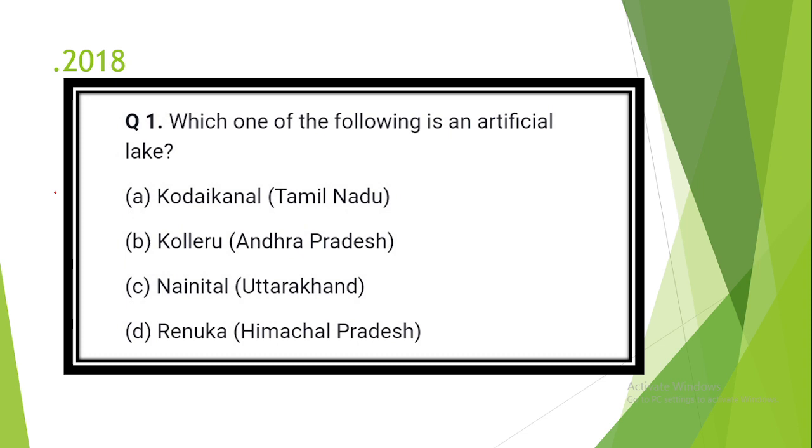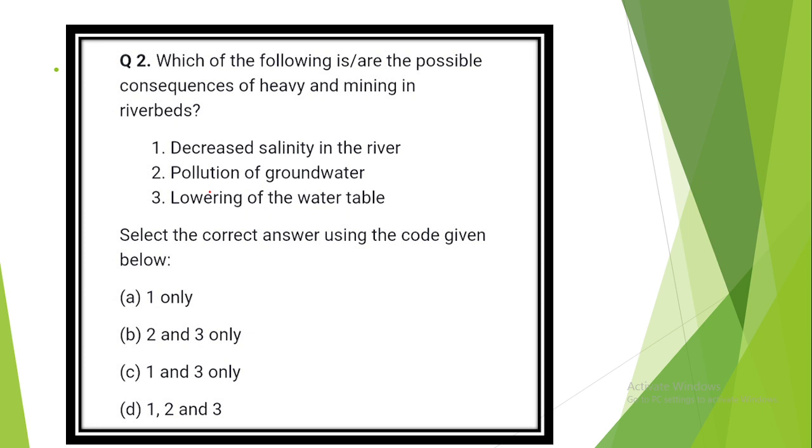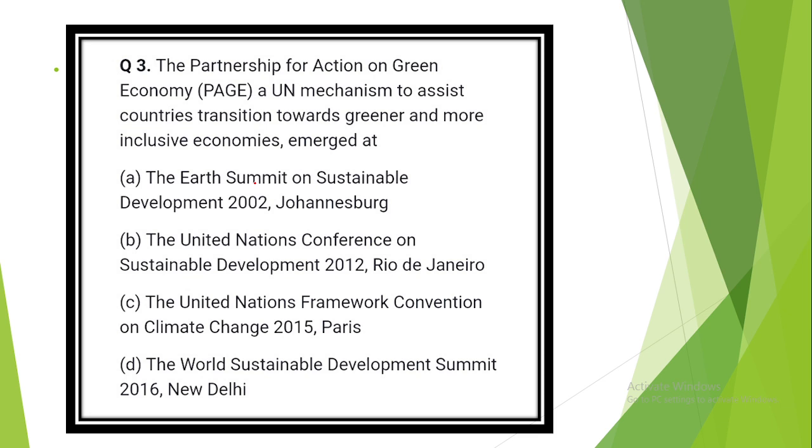Question number 19. Recently there was growing awareness in our country about the importance of Himalayan nettle because it is found to be a sustainable source. The answer is option D: Textile fiber. Question number 20. In the context of proposal of the use of hydrogen-enriched CNG as a fuel, it can reduce carbon dioxide and hydrocarbon emission. Hydrogen up to one-fifth by volume can be blended with CNG as fuel for buses.